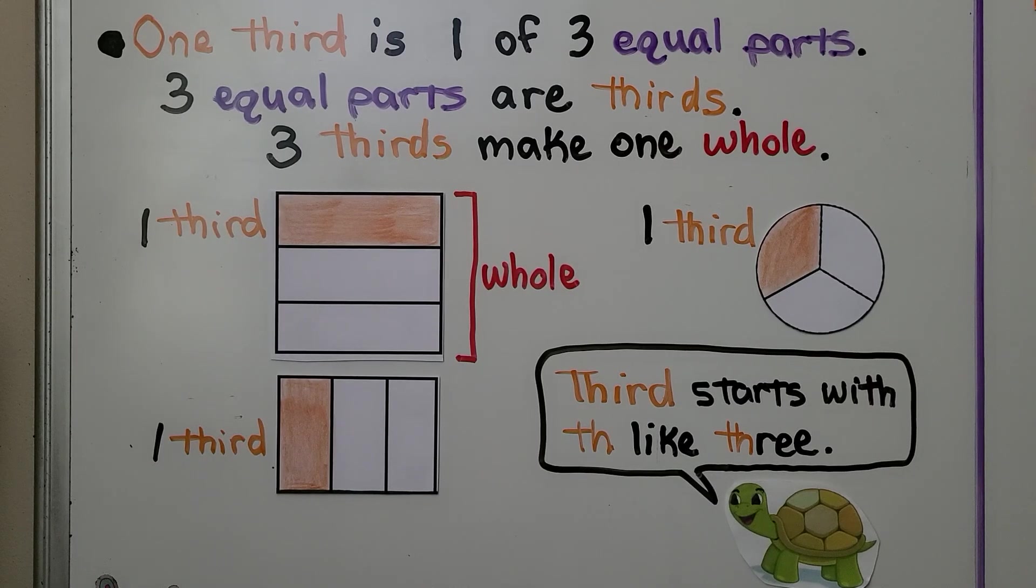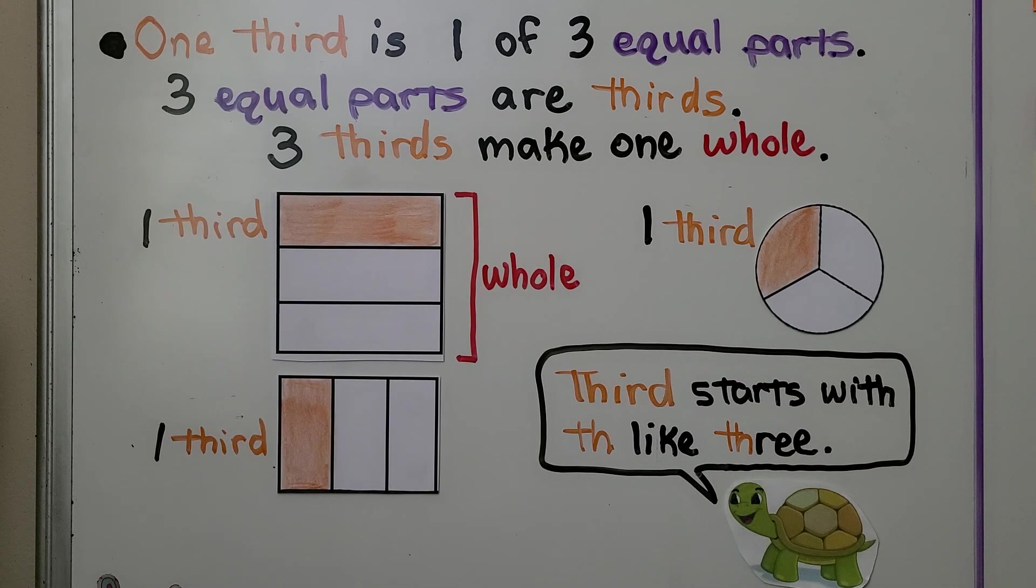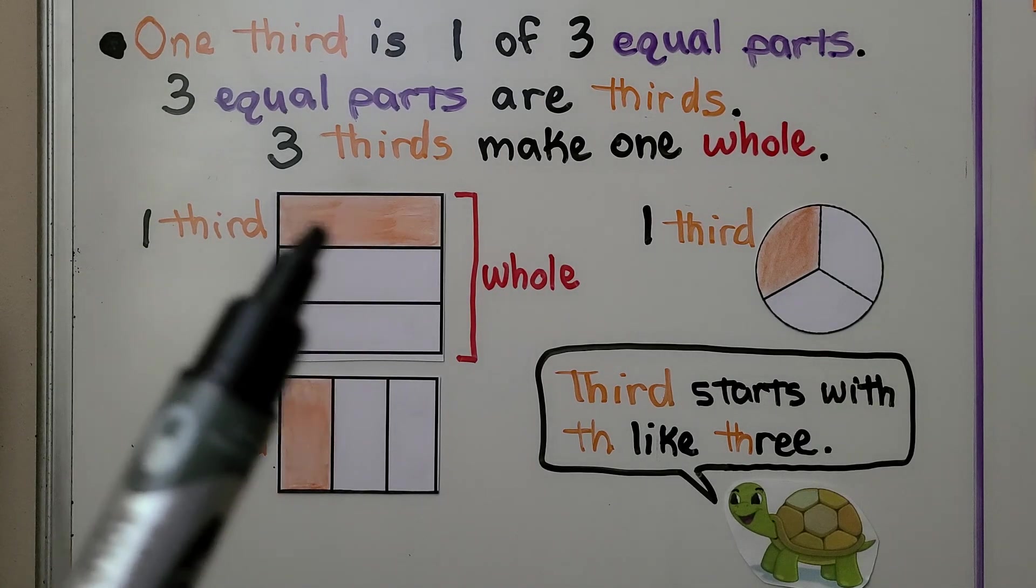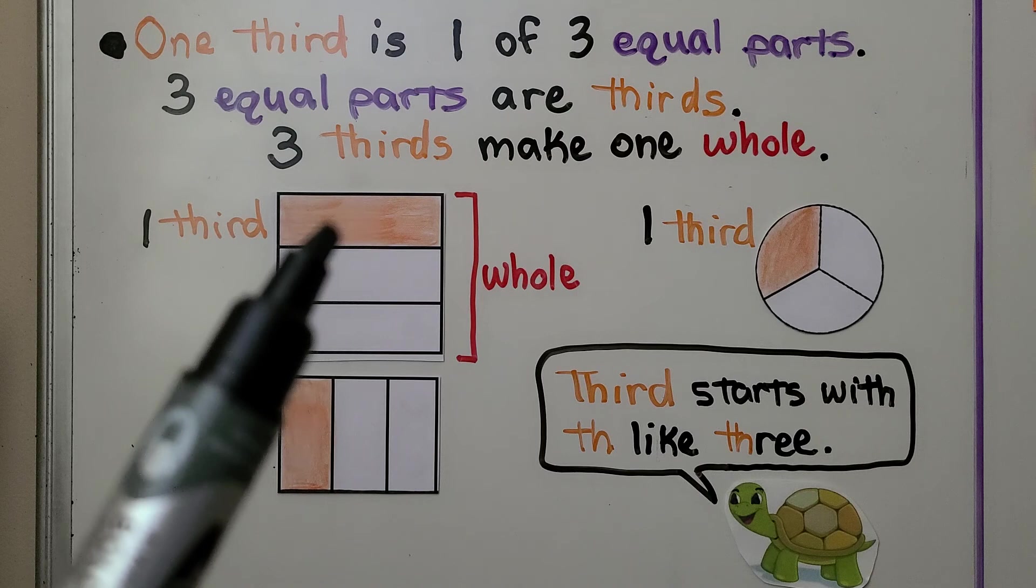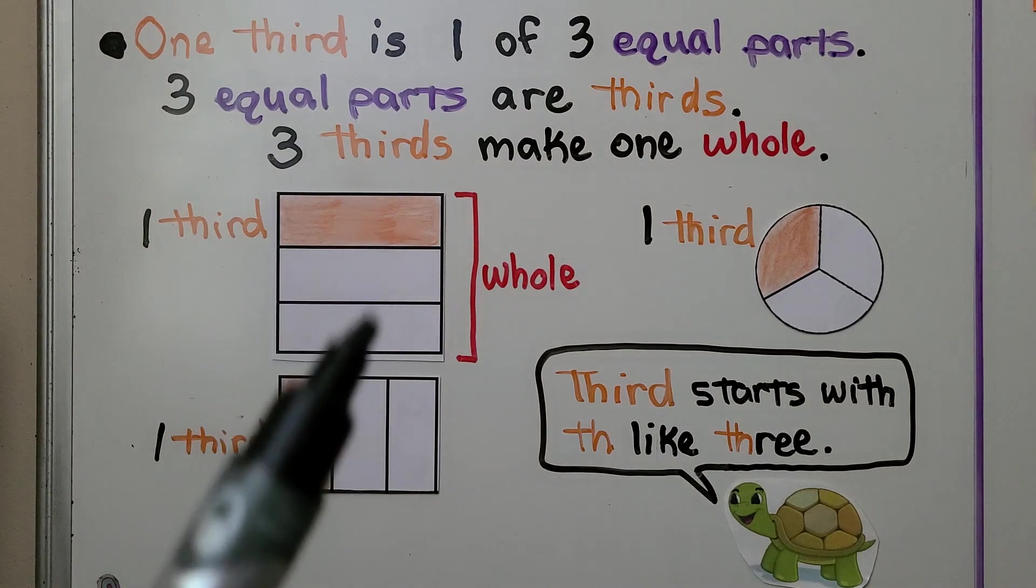One third is one of three equal parts. Three equal parts are thirds. Three thirds make one whole. So this orange part is one third of the rectangle. All three of the parts would be a whole.